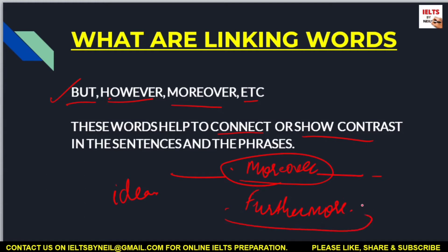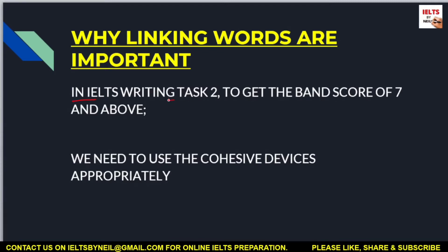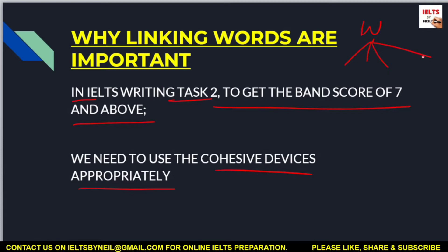Before I show you how to use linking words, I have to tell you why they are important. In IELTS Writing Task 2, to get a band score of 7 and above, we need to use cohesive devices appropriately. In the IELTS writing section, you are judged on four parameters: number one is coherence and cohesion, number two is lexical resource (vocabulary), number three is grammar, and number four is task achievement.